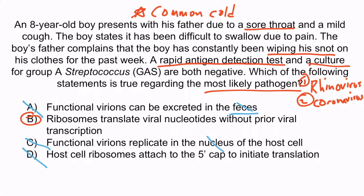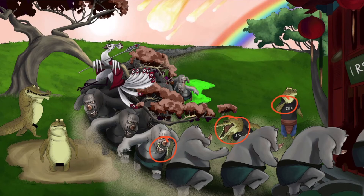Choice D is wrong because picornaviruses lack the five prime cap. Instead, they have an internal ribosomal entry site, and it's this that initiates translation. And that's all you need to know about rhinovirus.